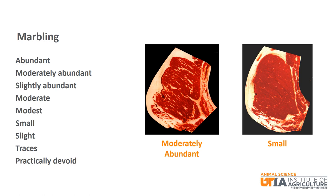Obviously, abundant is the most amount of marbling, while practically devoid is the least amount of marbling. Generally, more marbling present will result in a better quality grade. You can see in the meat pictures how much more marbling is present with moderately abundant than with small. Most people would probably choose the moderately abundant steak to eat over the steak with a small amount of marbling. Which one would you choose?